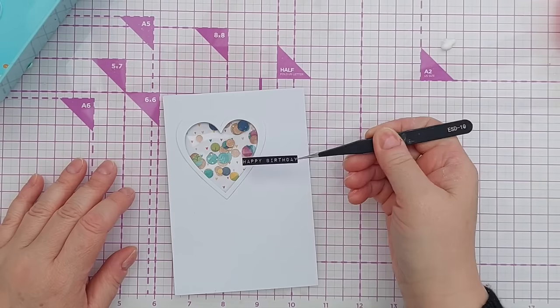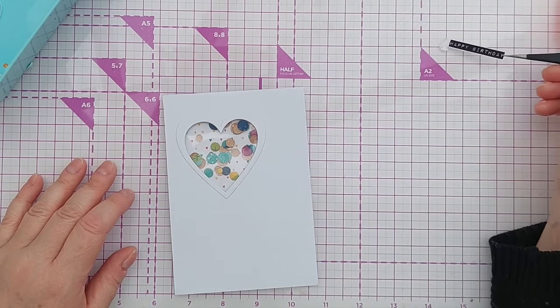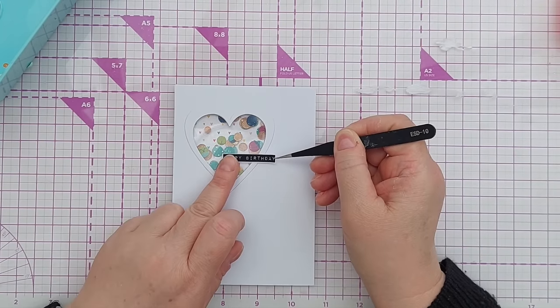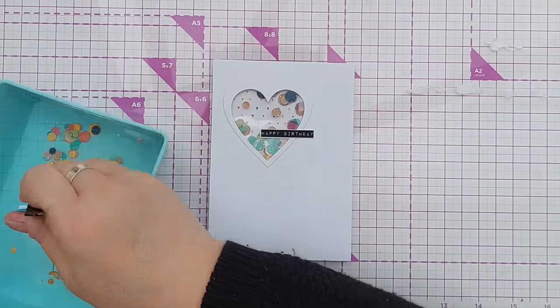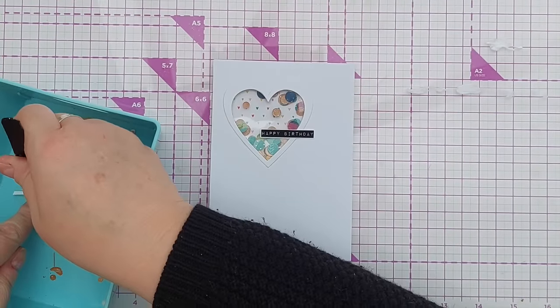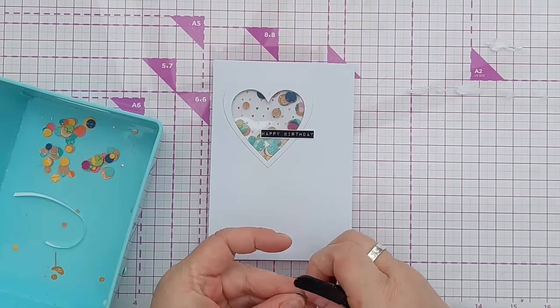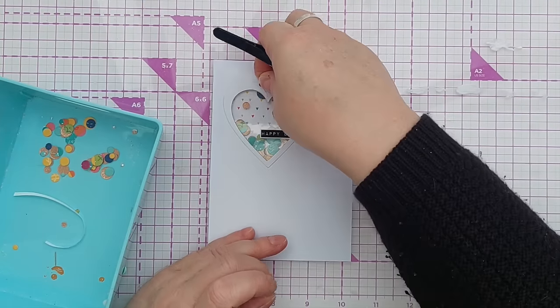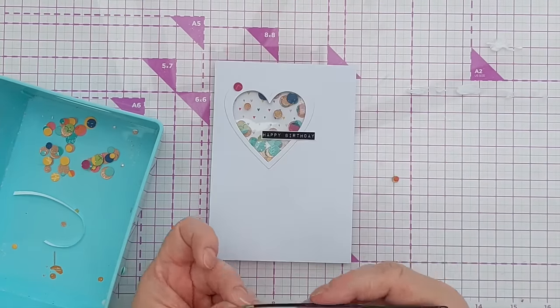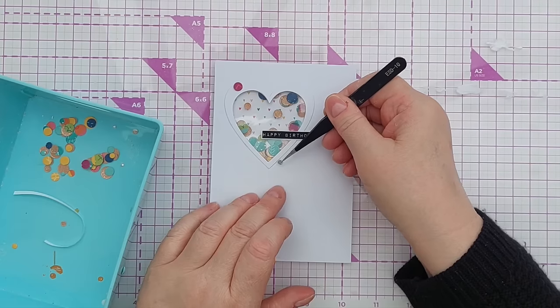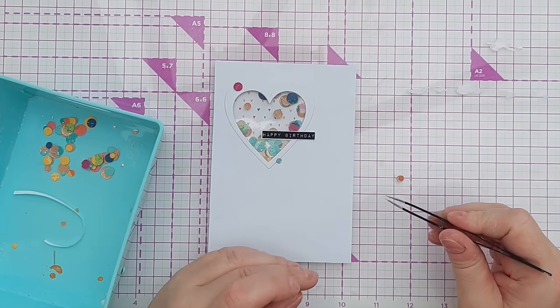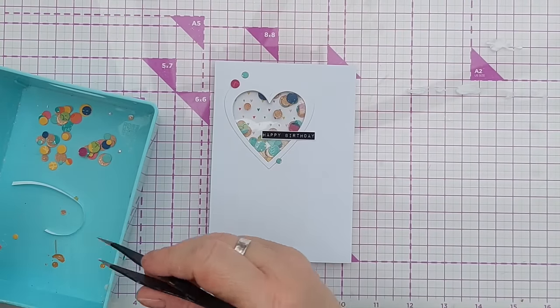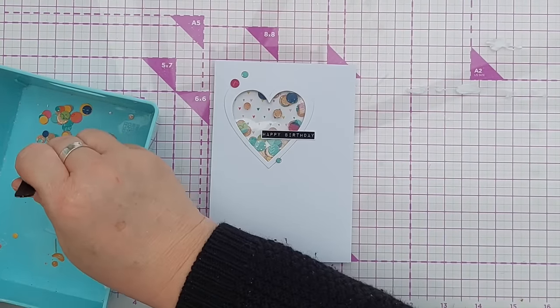For my sentiment I've got this little pre-printed and pre-cut happy birthday so I will dip that in a bit of glue and add it here. I've got some of these colorful dots left over so I could add a few here and there and even add some glossy accents on top to make them look a bit like enamel dots.